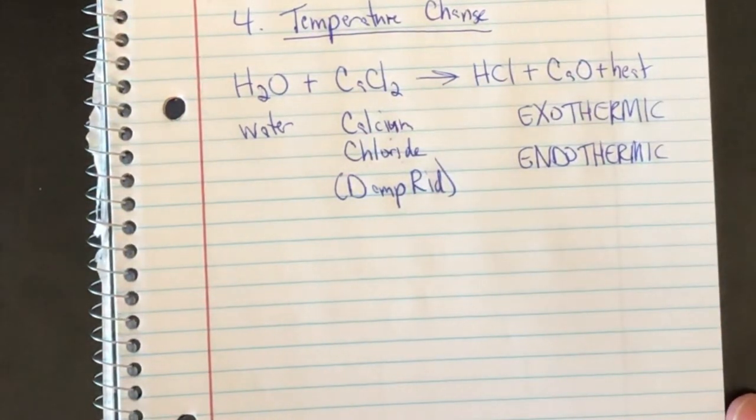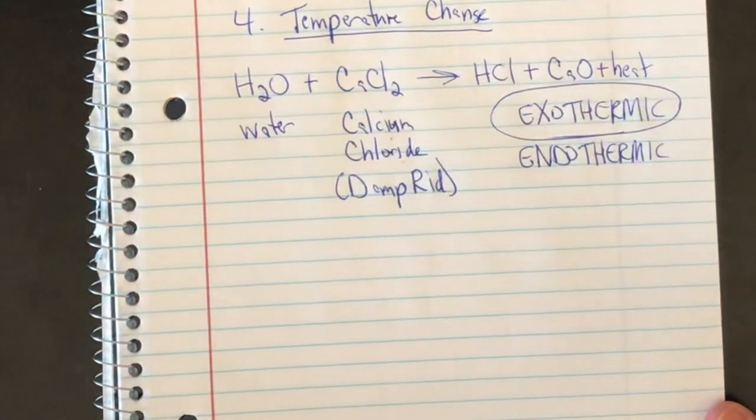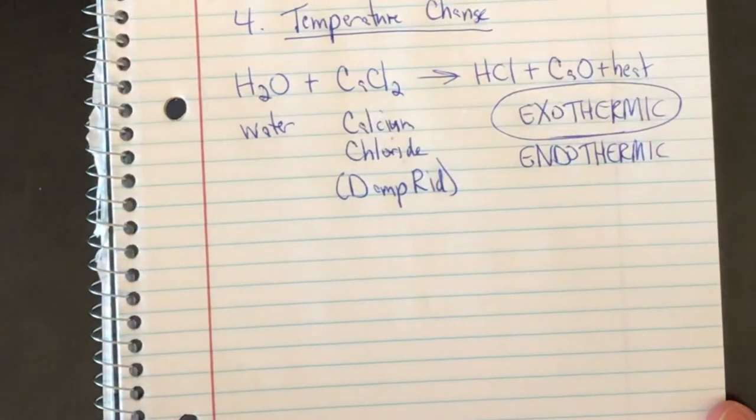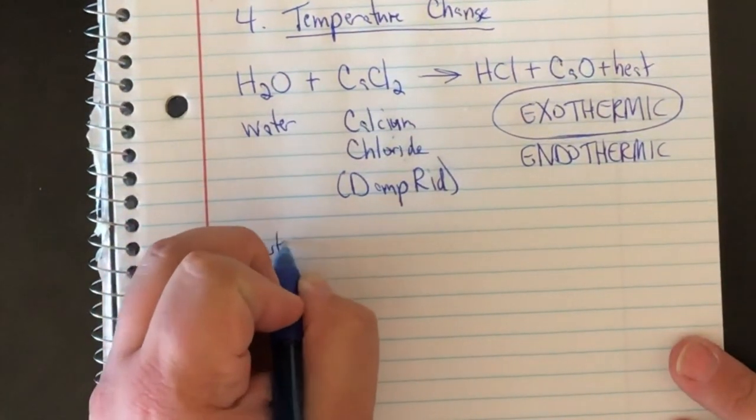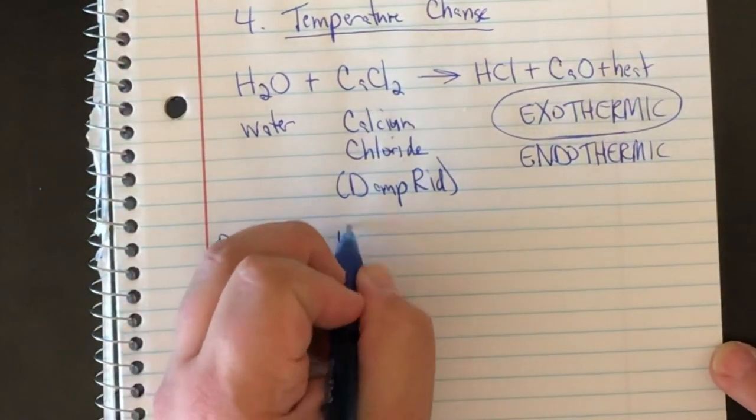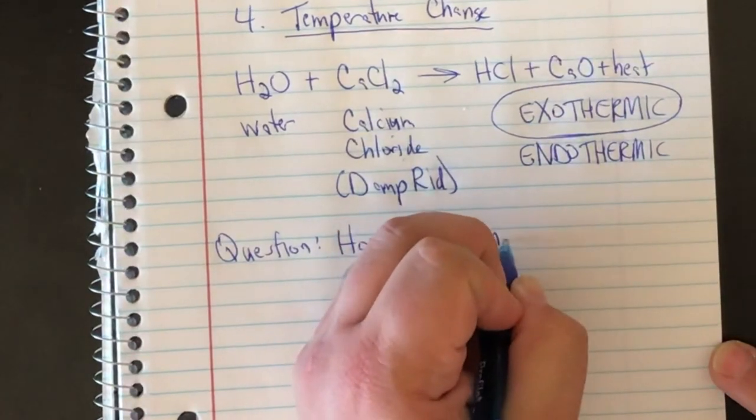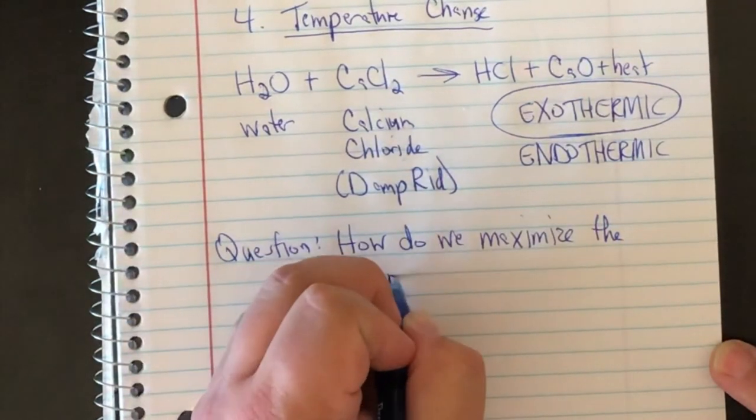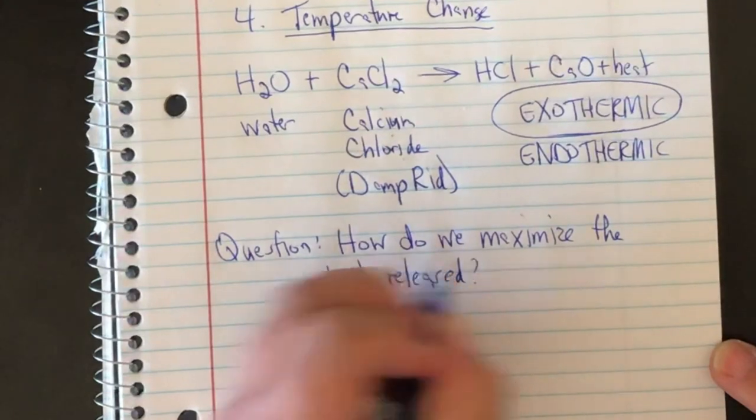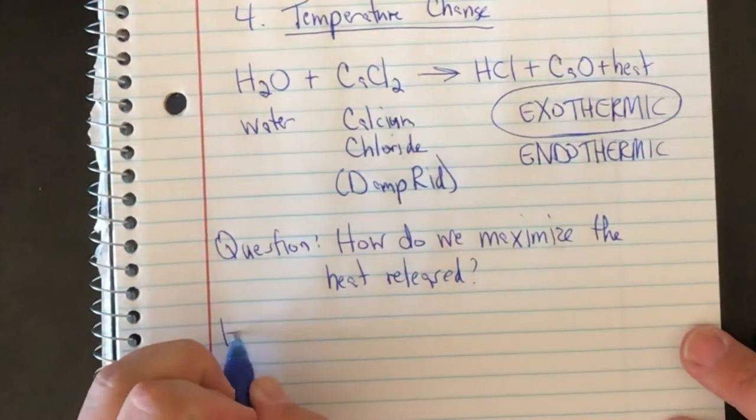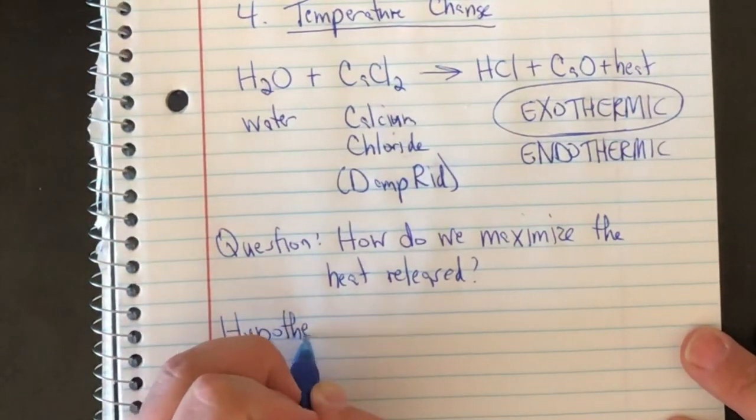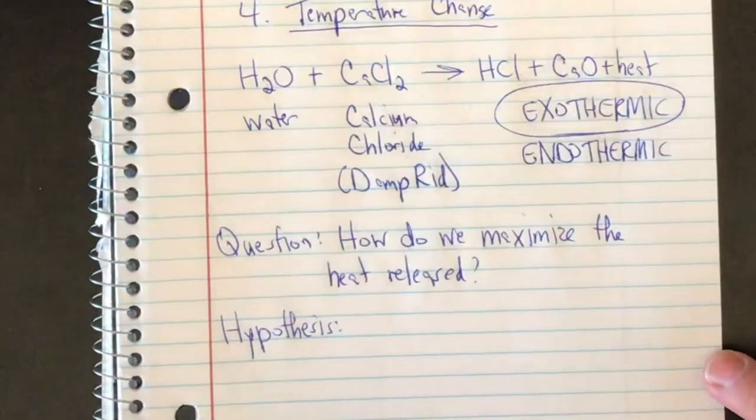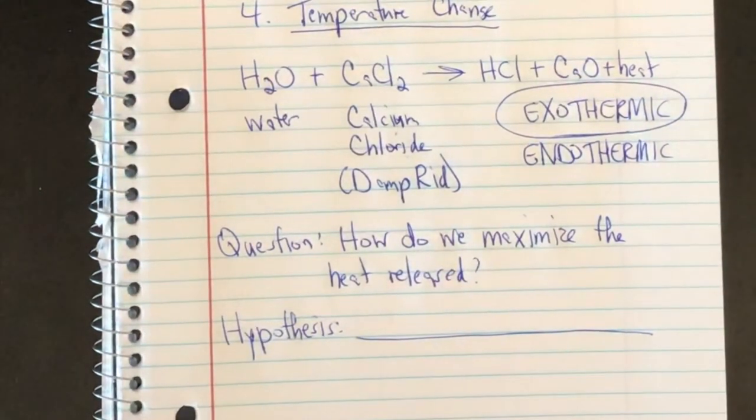It causes the water to cool off. But today we're going to be focused on the exothermic reaction of calcium chloride and water. So we're going to start, as we always do, with the question: how do we maximize the heat released by this reaction? Your hypothesis, as always, will be what you guess the answer to the question is. So I want you, between now and the beginning of the lab, to come up with an idea for how you think we might get the most heat possible out of this reaction.